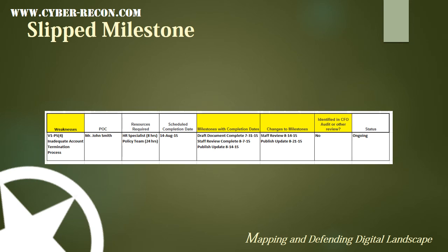It looks like something went wrong and we won't meet our scheduled completion date. It looks like the staff review won't be complete on time, slipping the program to the right. We can't change the scheduled completion date, but we do need to change some of the milestones. So in this case, we would update information in the changes to milestone column, including the staff review date, which is now August 14th, and the new published date, which is August 21st. The status continues to be ongoing.